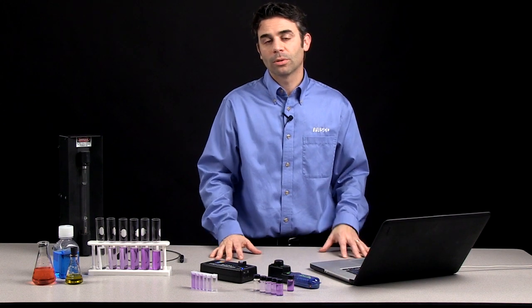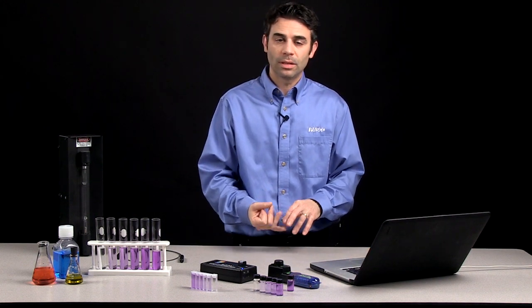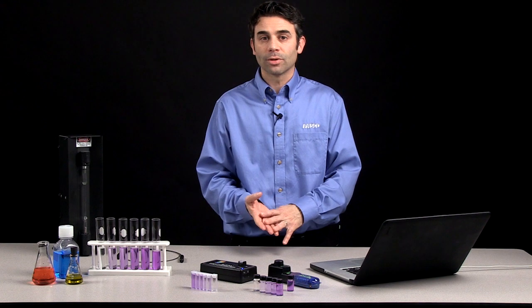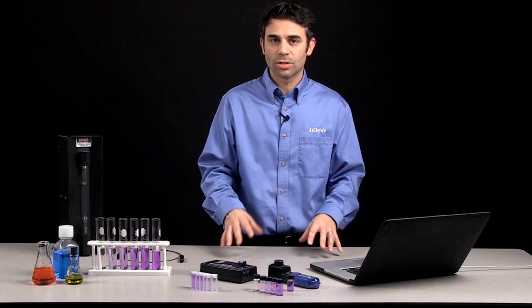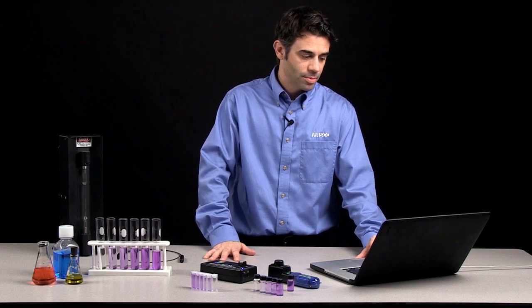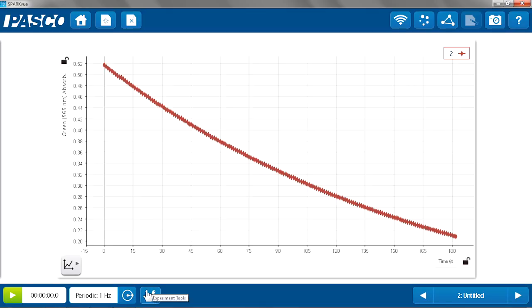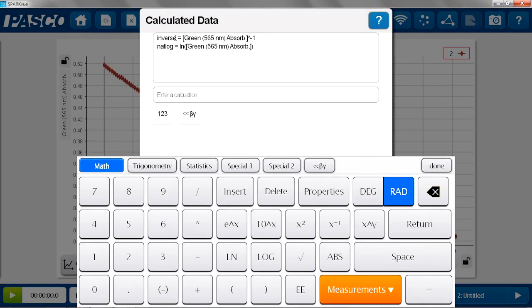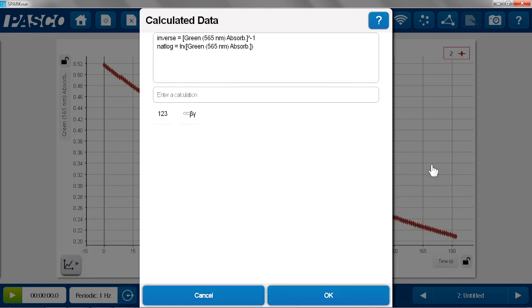To do the kinetic studies, you really want to be able to look at not only the absorbance, but the natural log and the inverse of the absorbance to see which one of those is a straight line to determine the order of the reaction. Both SparkView and Capstone allow us to make calculations. So in this case, I created some calculations, inverse and natural log.